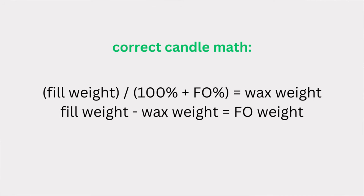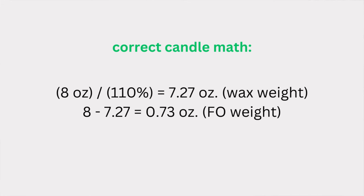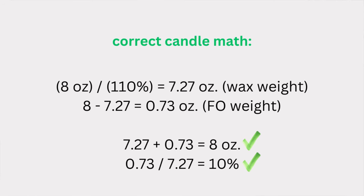The formula is: fill weight divided by (100% plus the fragrance oil percentage), and that gives you the wax weight. Then subtract the wax weight from the fill weight to get the fragrance oil weight. For example, with an eight-ounce fill weight at 10%, divide 8 by 110%, giving 7.27 ounces of wax. Subtract from 8 to get 0.73 ounces of fragrance oil. Check your work: the two numbers should add up to the fill weight, and dividing fragrance oil by wax weight should equal exactly 10%.